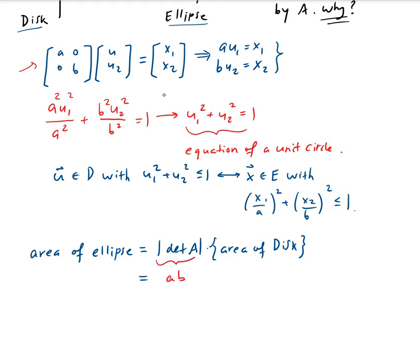And the area of a disk, in this case our disk is a unit circle with radius one. So that's going to be, the area of a circle is just πr^2. The radius is 1, so that's going to give us π. Therefore, the area of the ellipse is a*b*π.